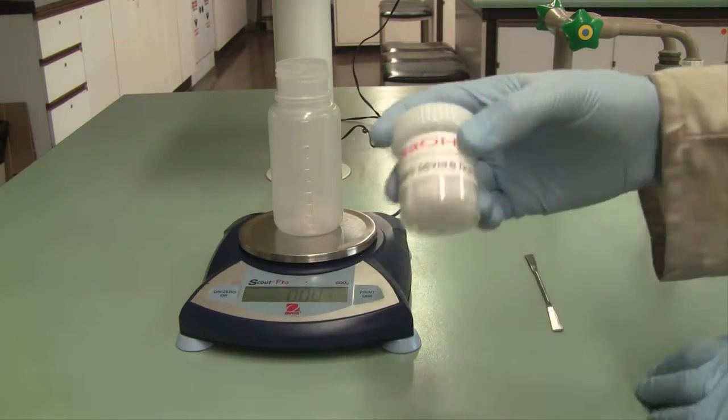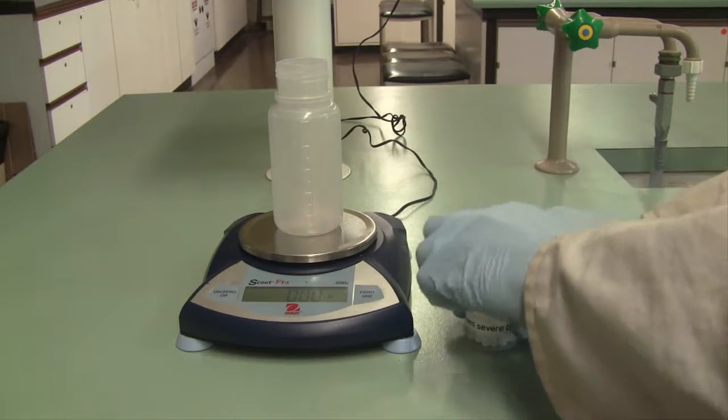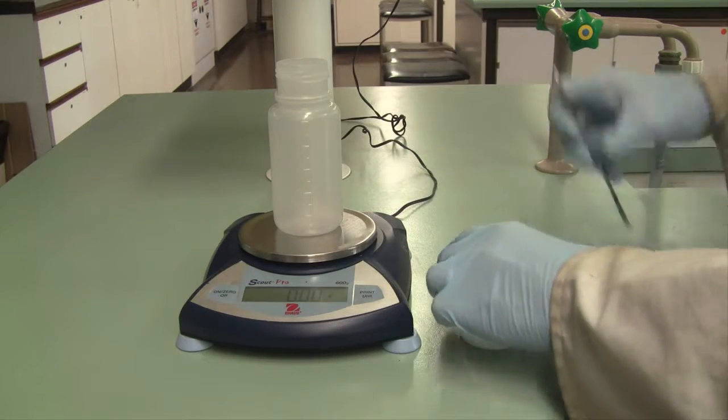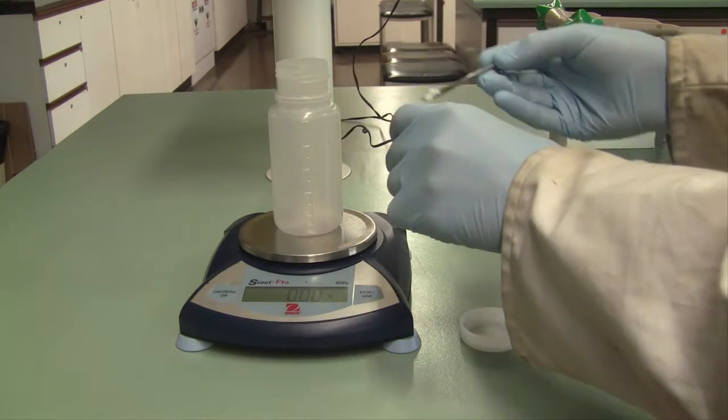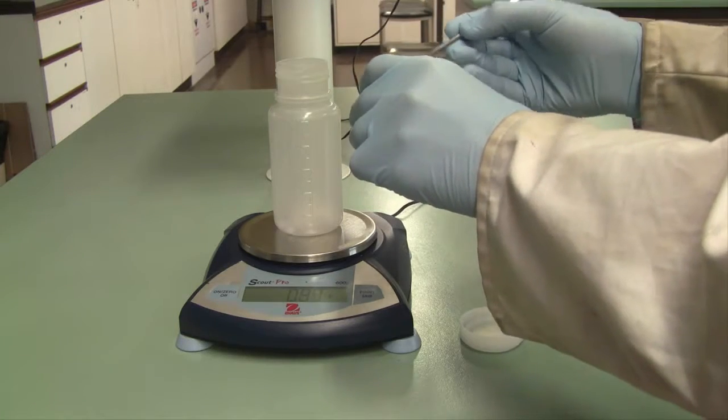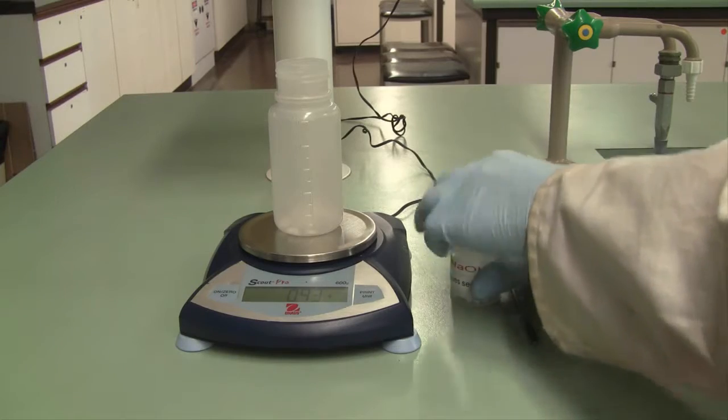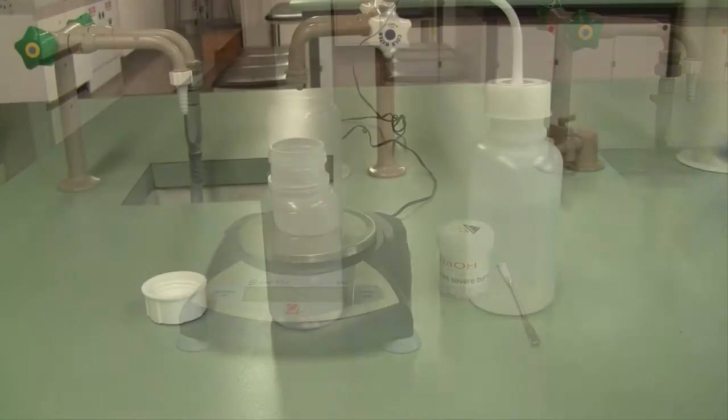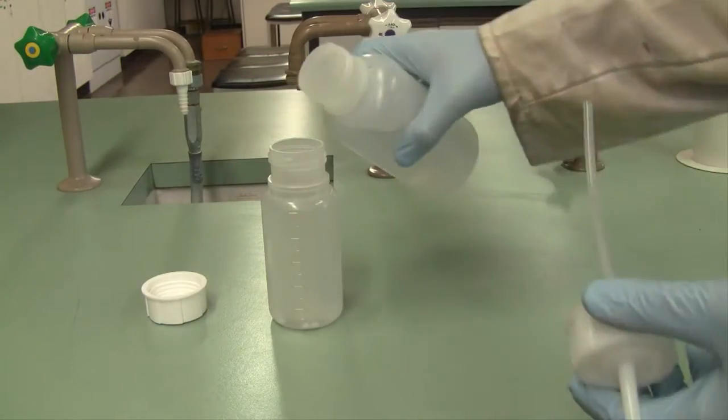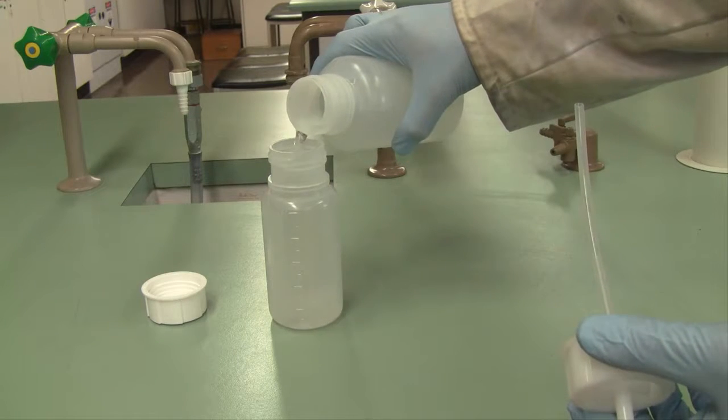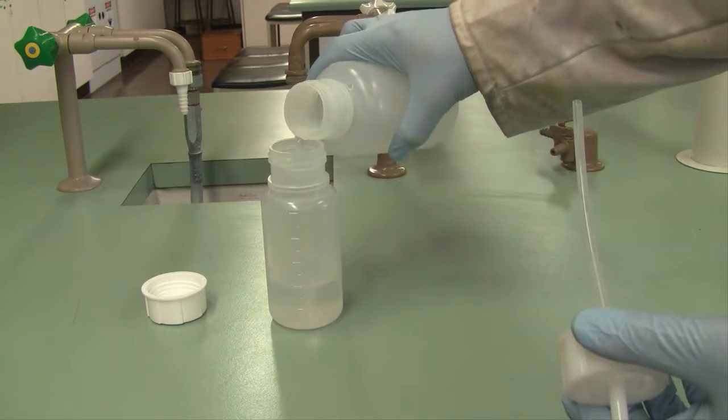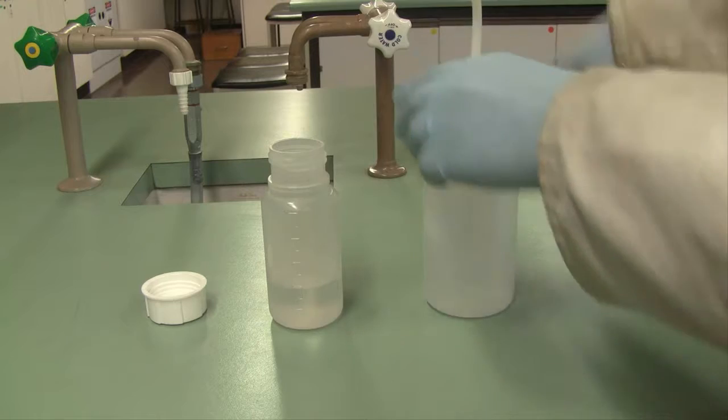We begin the experiment by preparing an approximately 0.1 molar sodium hydroxide solution. Please be aware that the sodium hydroxide pellets are corrosive, and you should handle them only wearing gloves. Weigh approximately one gram of the sodium hydroxide pellets into your plastic reagent bottle on a top loading balance. Then add approximately 100 mils of distilled water to the plastic reagent bottle. Then mix to dissolve the sodium hydroxide pellets.